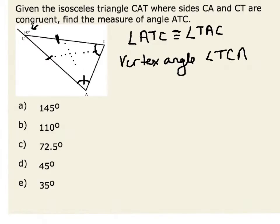Since we know that a straight line is composed of 180 degrees, we know that vertex angle TCA is given by 180 degrees minus 145 degrees, which is 35 degrees.